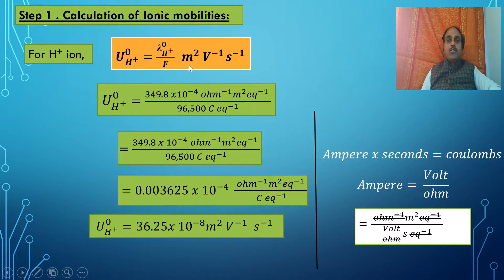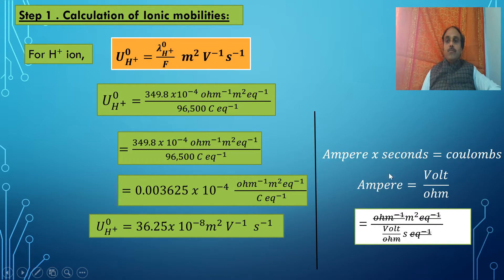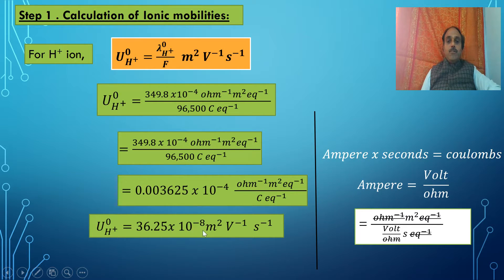The final unit obtained is meter² per volt per second. In the denominator, coulombs equals ampere × second, where ampere equals volt per ohm. Writing this out: per ohm·meter² per equivalent divided by (volt/ohm × second per equivalent) — the per-equivalent terms cancel, ohm and ohm cancel, leaving meter² per volt per second. The ionic mobility of H⁺ is 36.25 × 10⁻⁸ meter² per volt per second.